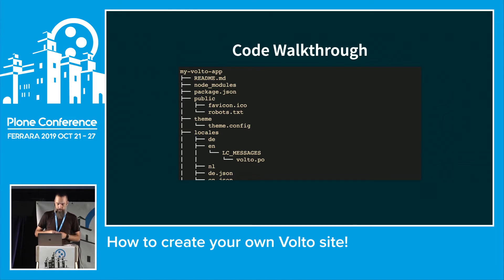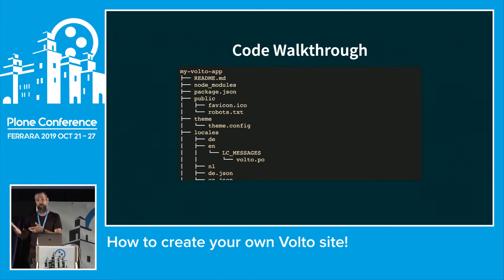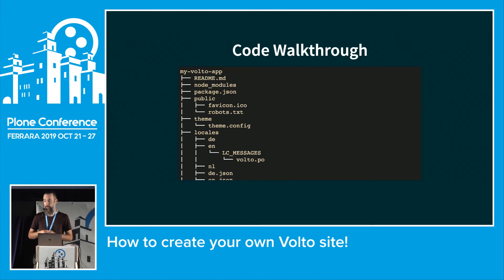The public folder is meant for static resources — in this case the favicon and robots.txt which you can customize. They are normally just copied over from Volto, and if you want to change them you can replace them here.